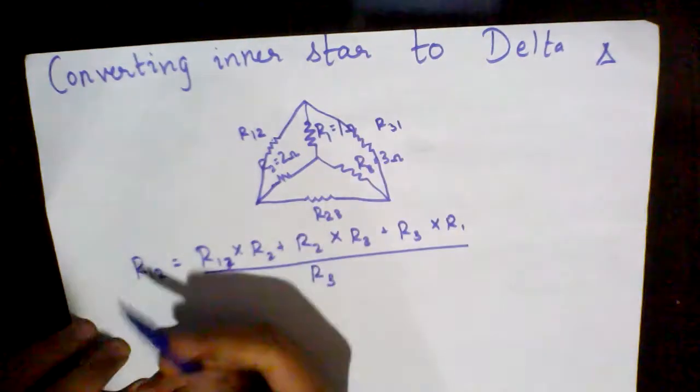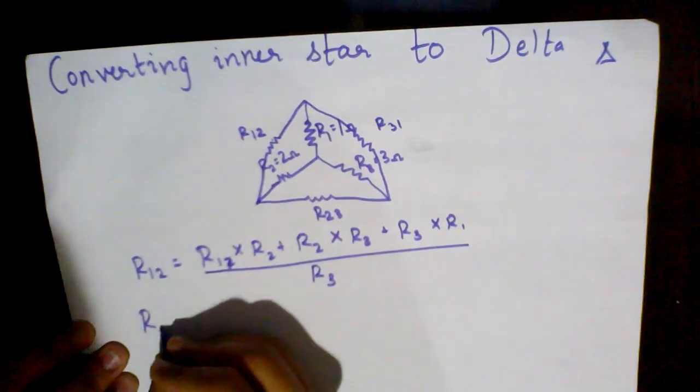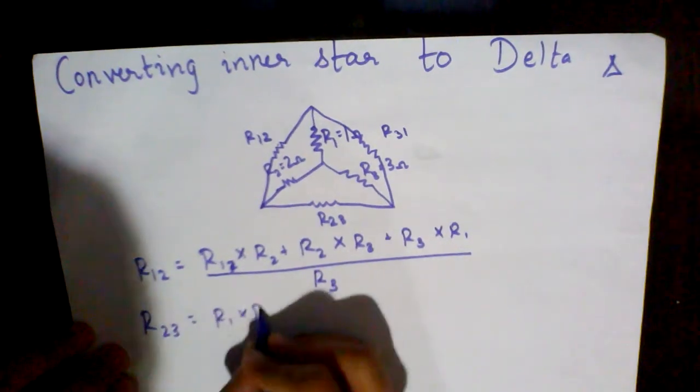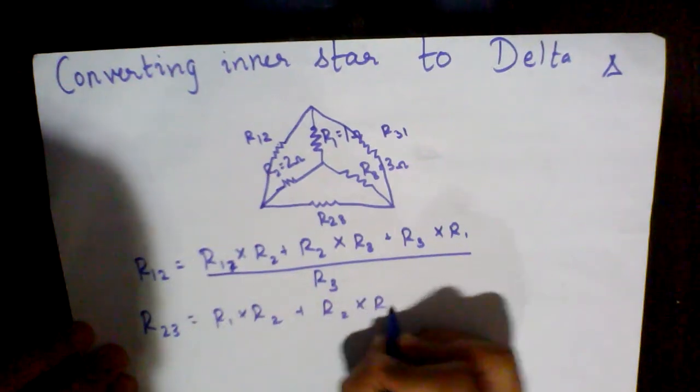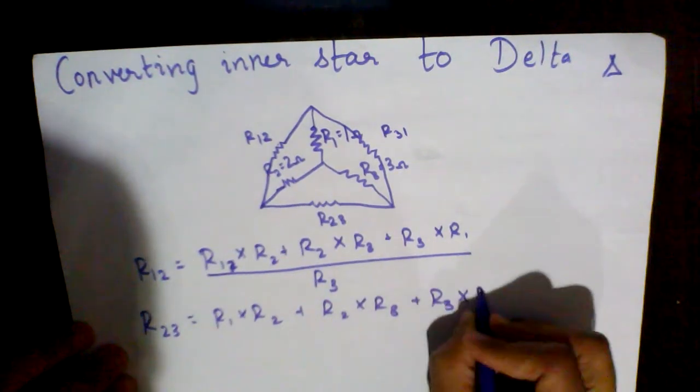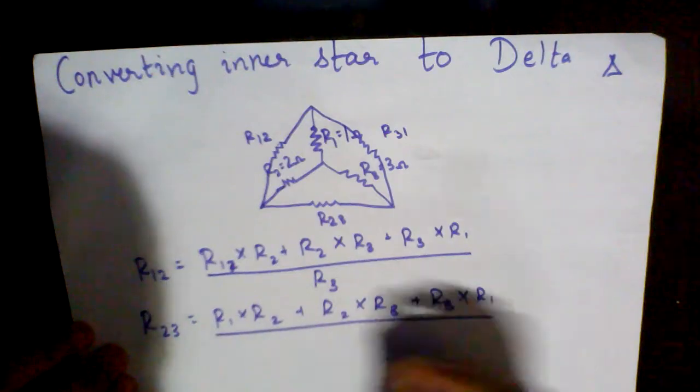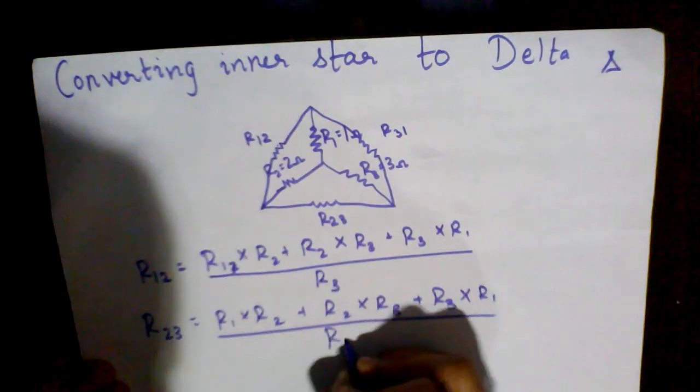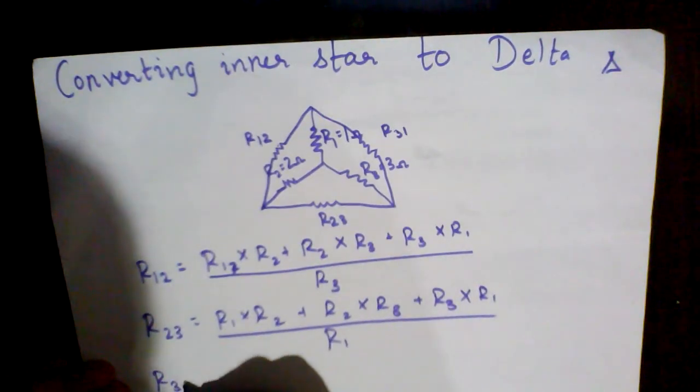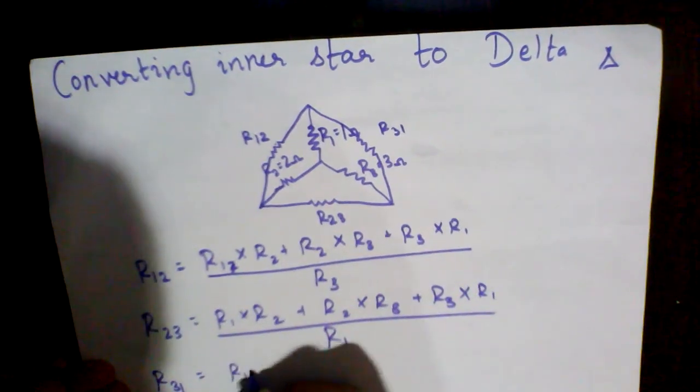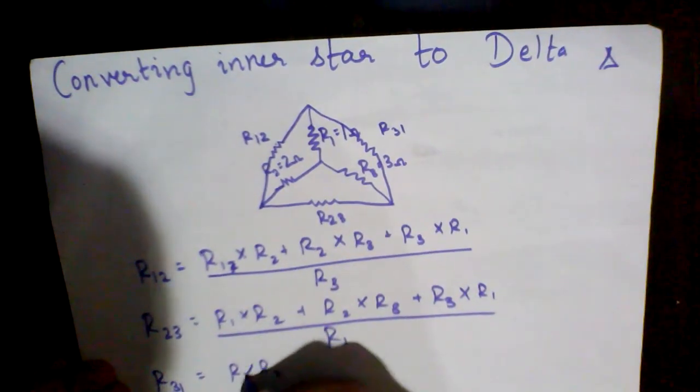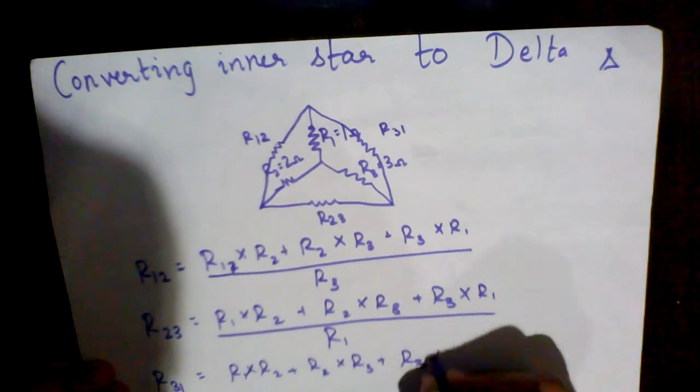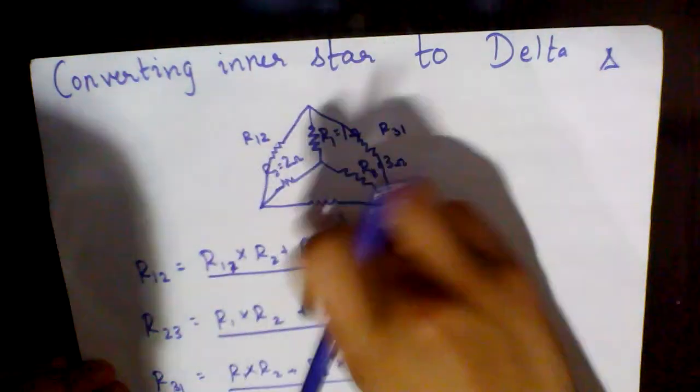Similarly, for R23, you do R1 into R2 plus R2 into R3 plus R3 into R1, divided by the resistance not present, which is R1. And for R31, same formula divided by R2.